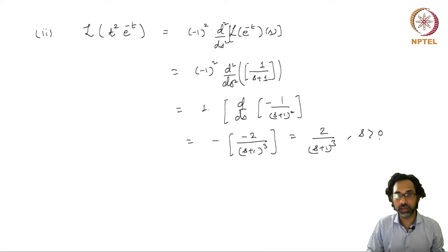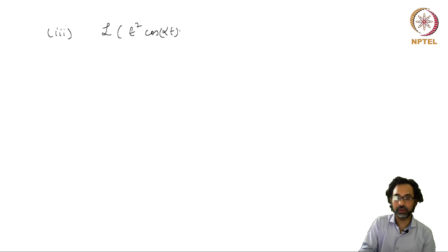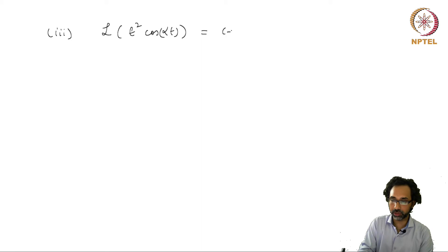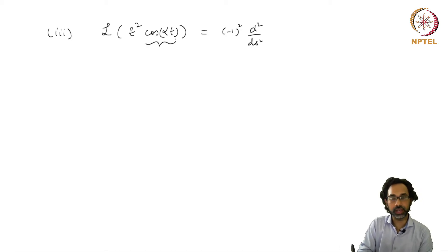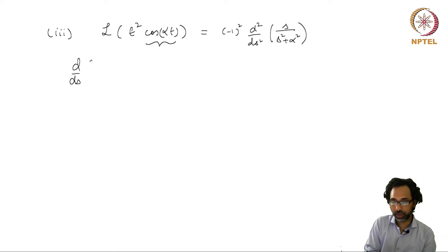It is also valid for s greater than -1, but it is valid for s greater than 0 as well. For another example, let us look at the Laplace transform of t² cos(αt), where α is a constant. We know this is going to be (-1)² times the second derivative of the Laplace transform of cos(αt), which from our previous result is s/(s²+α²).